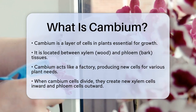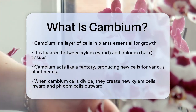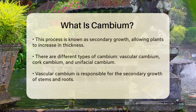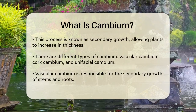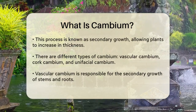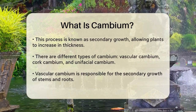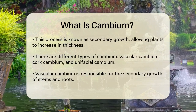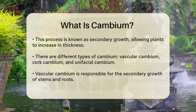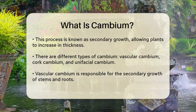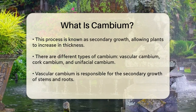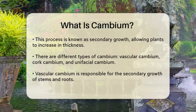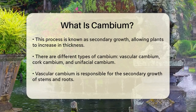Imagine cambium as a factory that produces new cells. These cells are not fully developed yet, so they can become different types of tissues depending on what the plant needs. When these cambium cells divide, they create new xylem cells towards the center of the stem and new phloem cells towards the outside. This process is what allows plants to grow thicker over time, a process known as secondary growth.